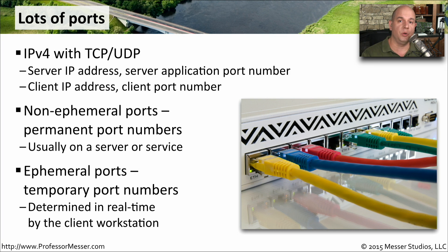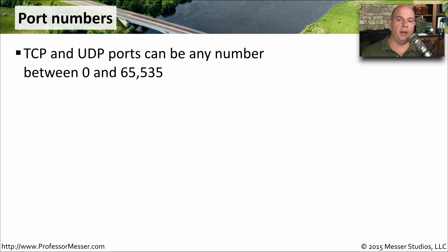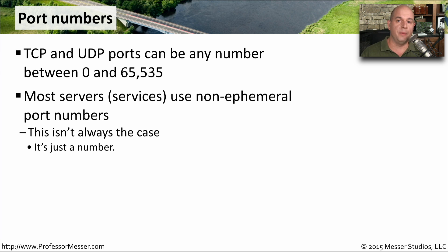For example, if your device is communicating to a web server, you're using an ephemeral port on your device — a temporary port number — so that you can create a connection to a non-ephemeral port number on that web server. Port numbers range between 0 and 65,535 for both TCP and UDP. Most services use non-ephemeral port numbers, although some services are completely dynamic and you'll connect to them at a different port number every time. You just need to understand that to communicate to a service, you need to know the port number initially and then start the conversation.